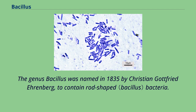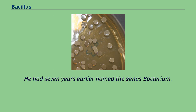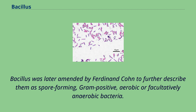The genus Bacillus was named in 1835 by Christian Gottfried Ehrenberg to contain rod-shaped bacteria. He had seven years earlier named the genus Bacterium. Bacillus was later amended by Ferdinand Cohn to further describe them as spore-forming, gram-positive, aerobic or facultatively anaerobic bacteria.